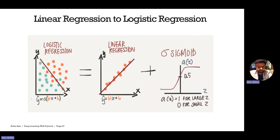Using this understanding, we can say that logistic regression is nothing but linear regression plus the sigmoid activation function, where the sigmoid outputs close to 1 for large positive values of the linear part and close to 0 for large negative values.